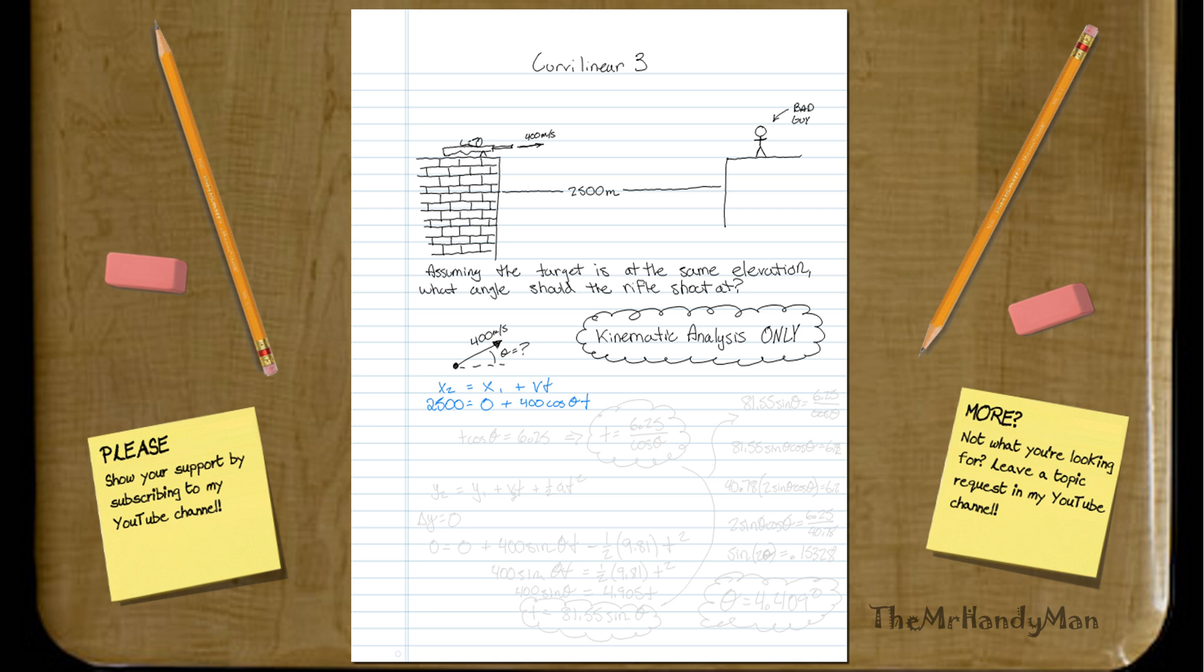So when we work that out, we can simplify it out a little bit more. We can get t cosine theta will equal 6.25, or you could get it into a nice little fancy format where you're just solving for t, 6.25 divided by cosine theta. And you'll see why I do that later, because I've thought ahead of what I'm going to do.